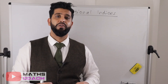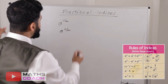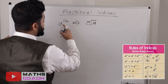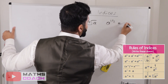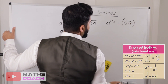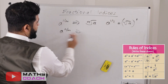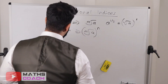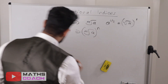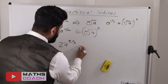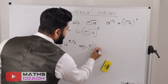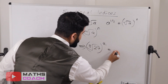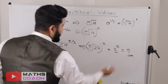Now moving on to fractional indices. If you have a to the power of 1 over m, you simply take the mth root of a. So a to the power of one-half means the square root of a. For a to the power of n over m, you take the mth root of a and then raise it to the power of n. For example, 27 to the power of 2 over 3: take the cube root of 27, which is 3, and then 3 squared equals 9. So the answer is 9.